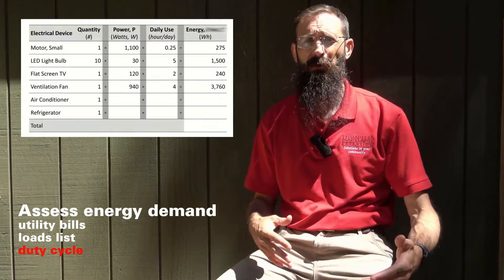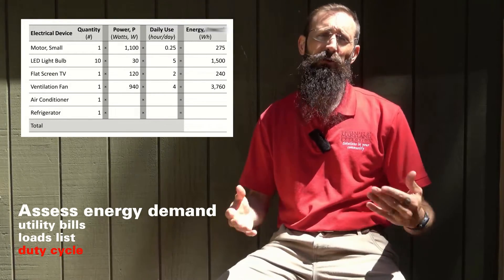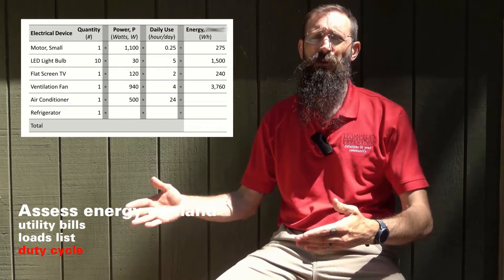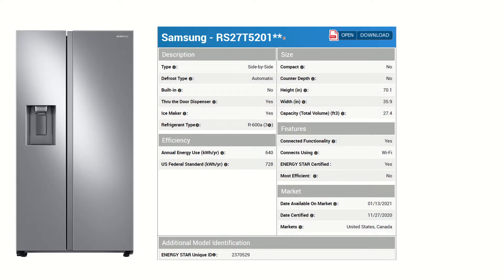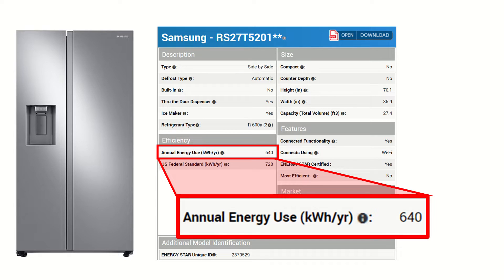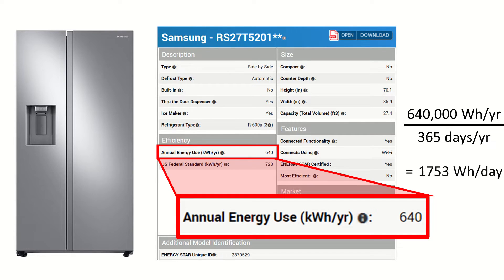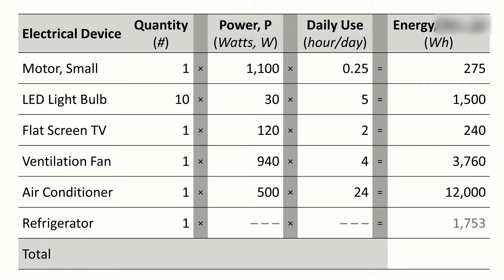Pay particular attention to any device having a duty cycle — something like a refrigeration system or air conditioner that cycles on and off throughout the day. In those instances you could measure the device's baseline during periods of low energy consumption and its maximum demand whenever the compressor is active. Another approach is to divide the device's estimated annual energy use by 365 days — for example, 640,000 watt hours divided by 365 days gives a daily energy use of about 1,753 watt hours. Once all devices are listed, we add the values to get a total daily energy use of 19,528 watt hours.